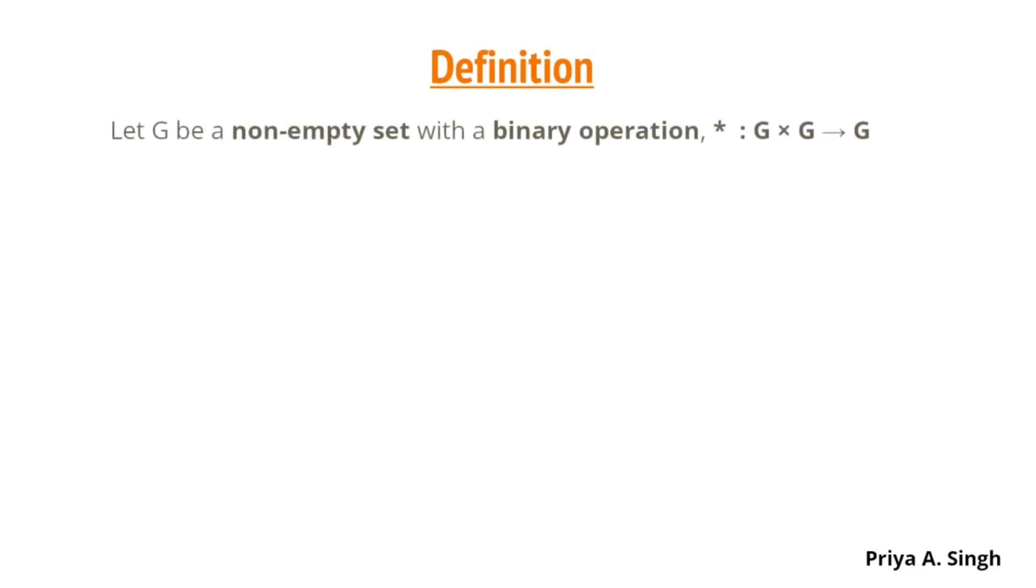Now, let's define what is a group. Let G be a non-empty set together with a binary operation star which goes from G cross G to G. That is, it assigns each ordered pair, A comma B which is in G cross G, an element which is in G. And it can be noted as (a,b) → a*b.